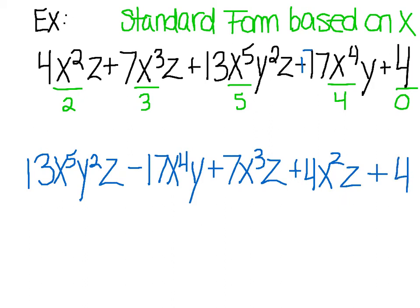So if we look at this, our degrees in terms of x goes 5, 4, 3, 2, 0. This is order from largest to smallest and this is standard form.